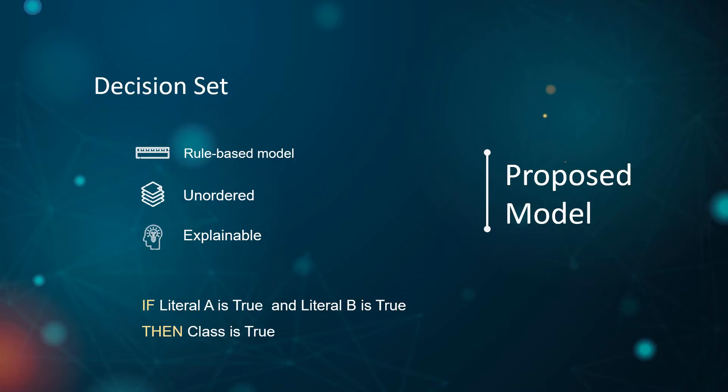Arguably, the most explainable machine learning models use decision rules. In this paper, we focus on classification problems where the input is a set of instances with features and a class. Decision sets are selected in this paper — they are type models with unordered rules, which explain each decision with a single rule. For example, the decision set can be: if vector A is true and vector B is true, then the class is true.